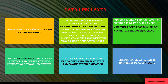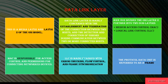The next layer is the data link layer. This is the second layer of the OSI model. It is responsible for the establishment and termination of connections as and when required. It also helps in detecting and correcting errors during communication from one host to another. This data link layer has two sub-layers: Medium Access Control (MAC) and Logical Link Control (LLC).